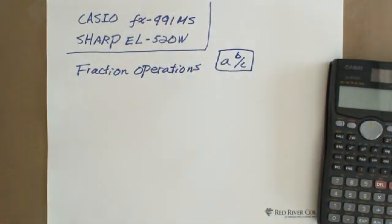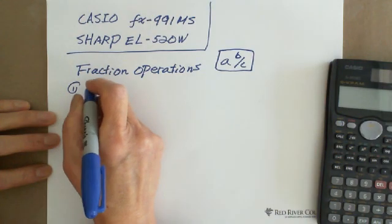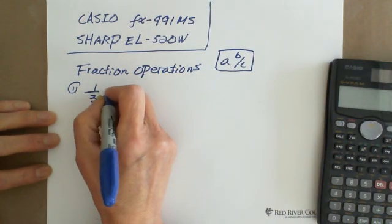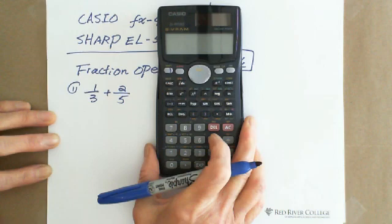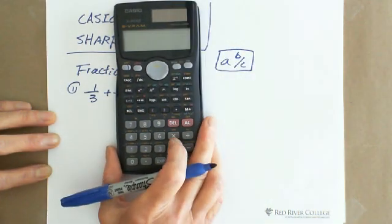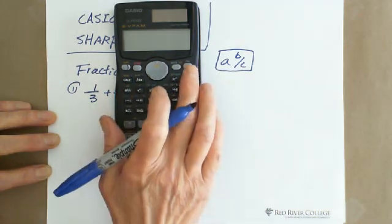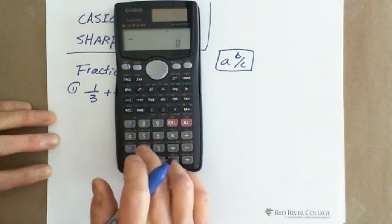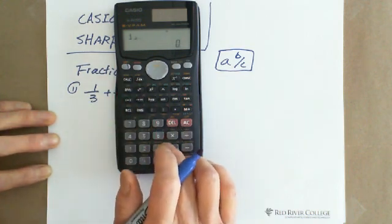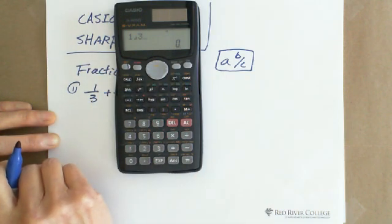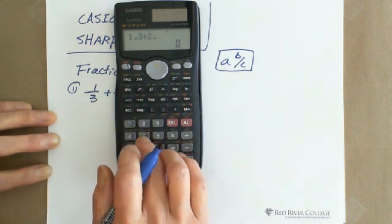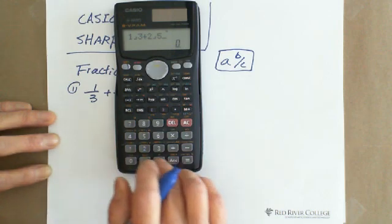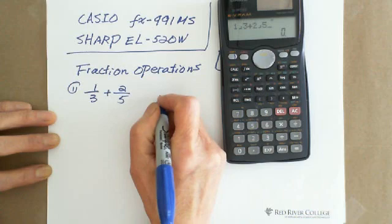Let me show you several examples. For example, if you're adding one-third with two-fifths, in the calculator, you do 1 ABC 3. This is the fraction 1 over 3, plus 2 ABC 5. So you input 1,